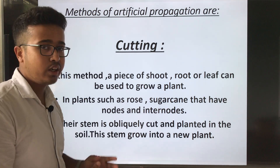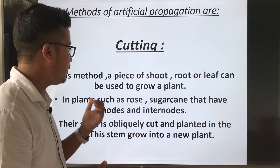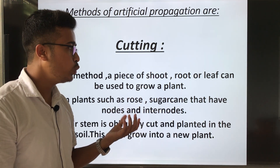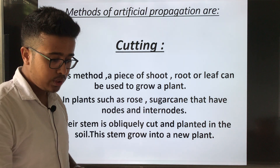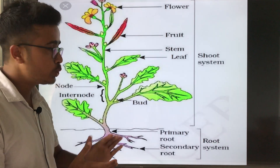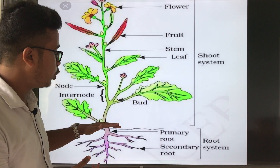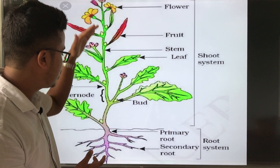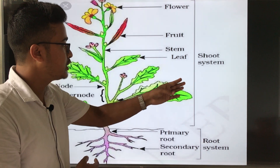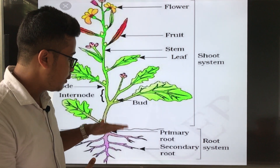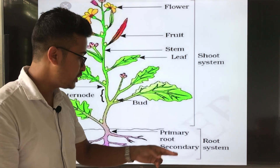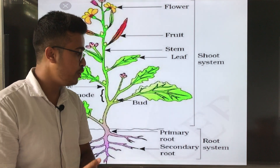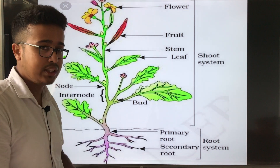In the cutting method, a piece of shoot, root, or leaf can be used to grow a plant. I will show you a picture. Shoot means from the apical portion downward — that portion is called the shoot system. The portion in the soil is called the root system. In the shoot system there are berries, flower, fruits, stem, leaf, bud, node, and internode.